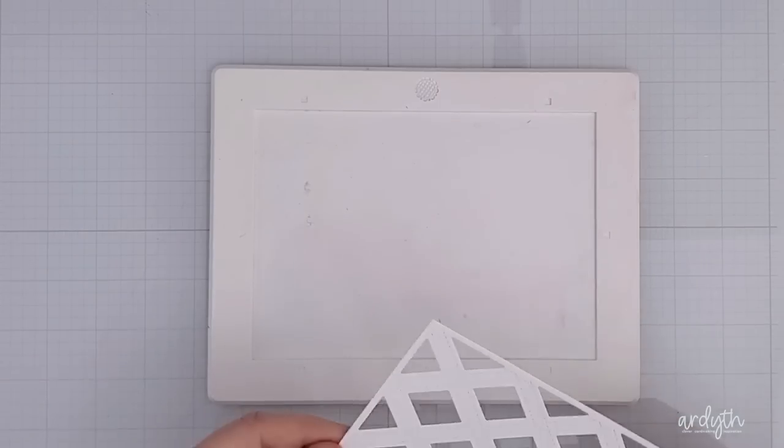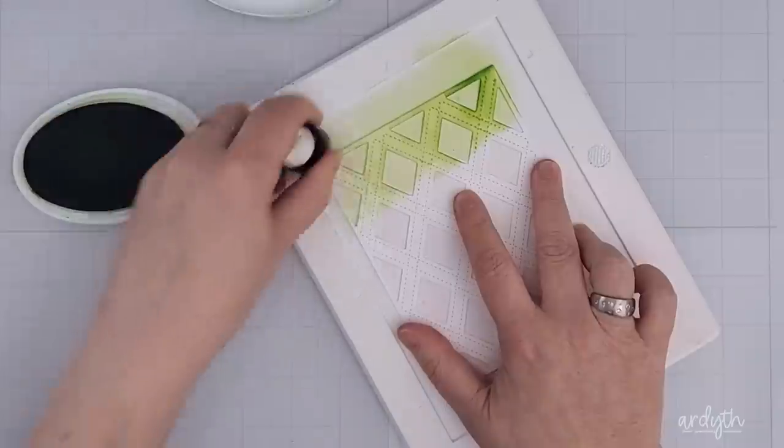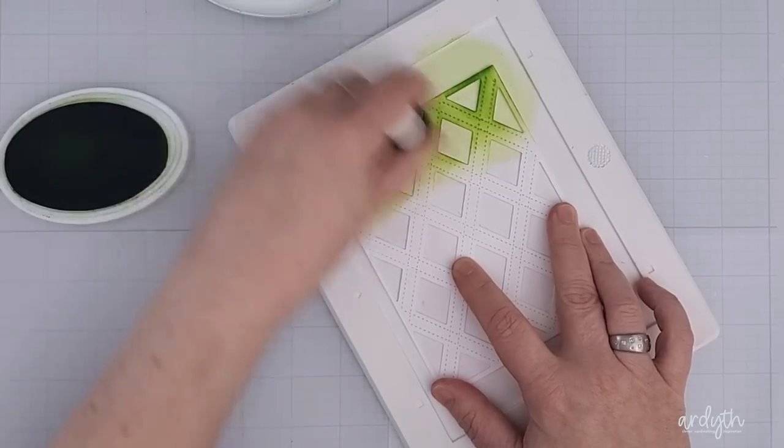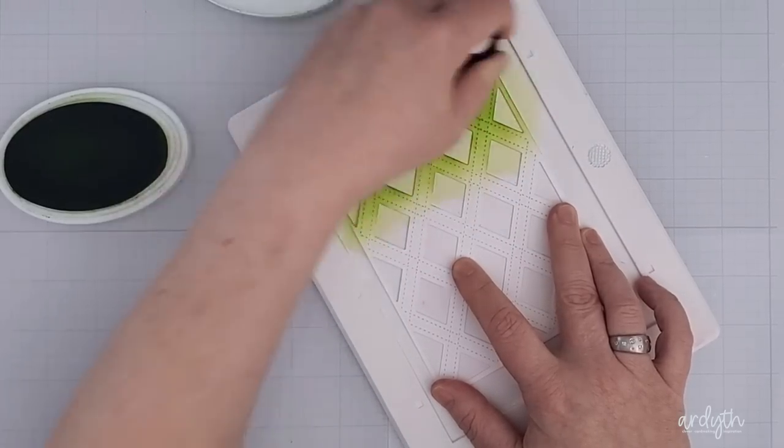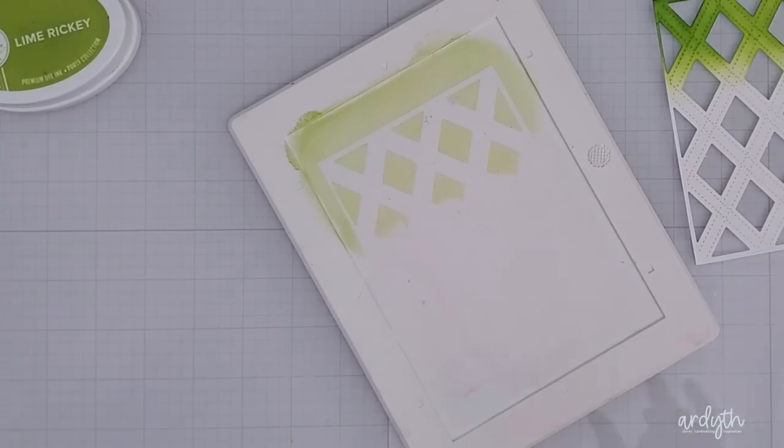Okay, so now let's add some color. I grabbed one of the die cuts on my little media mat which I find has just enough grip when I'm blending ink onto die cuts. I started with Lime Ricky ink and I really got going before I remembered that my intention was to actually use this die cut as a stencil and blend ink through onto another panel for a two-for-one.